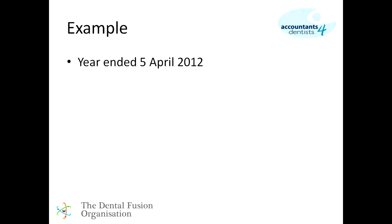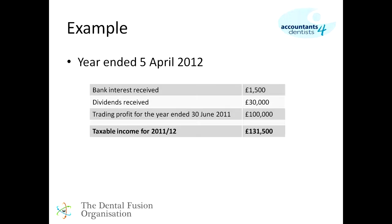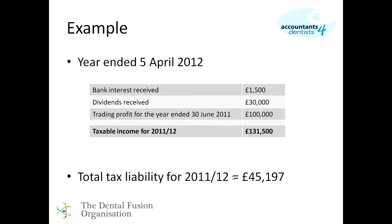Let's kick off with a very basic example looking at the year ended 5th of April 2012. Assuming bank interest of £1,500 received, dividends from a limited company of £30,000, and practice income of £130,000 with a year-end of 30th June 2011, the total taxable income for 2011-12 is £131,500. The total tax liability would therefore be £45,197 for that year. That isn't necessarily the amount paid in one go — the next slide explores how that liability is settled.